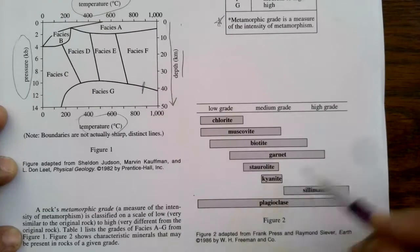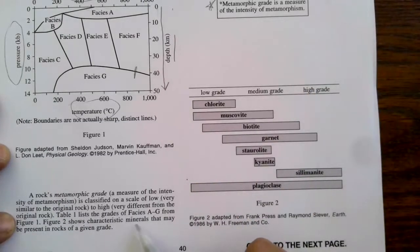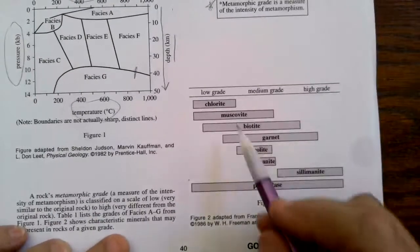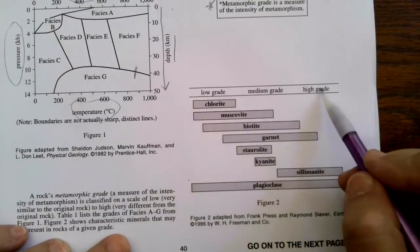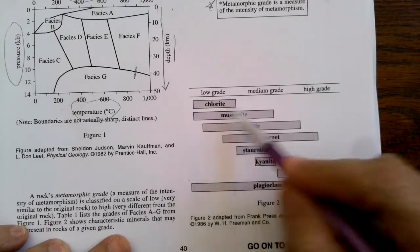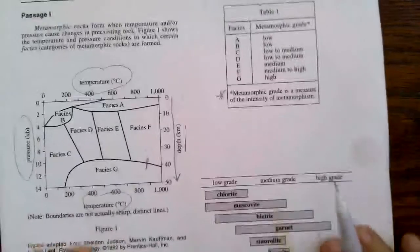Figure two, that's here, shows characteristic minerals that may be present in rocks of a given grade. So low grade to high grade has these different kinds of minerals in it. All right, questions.